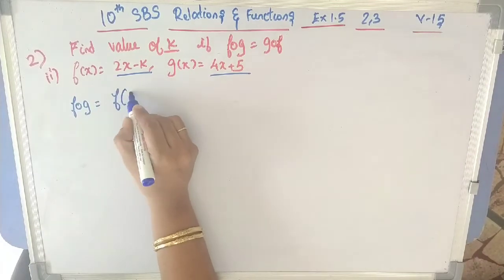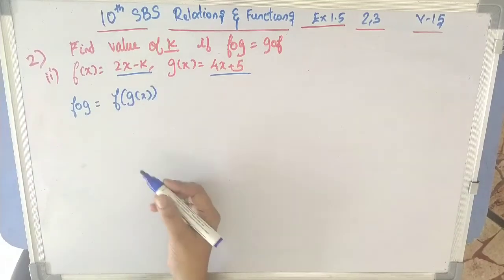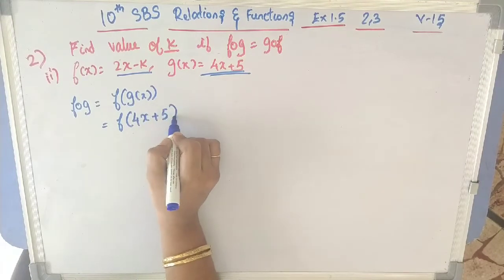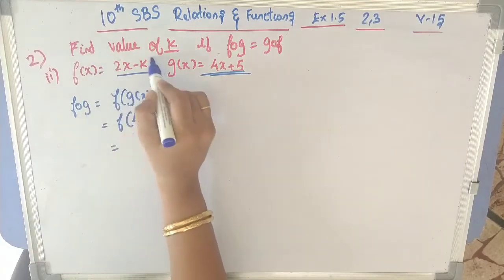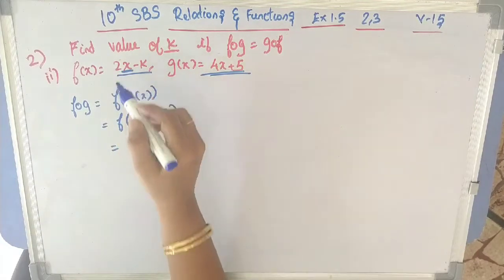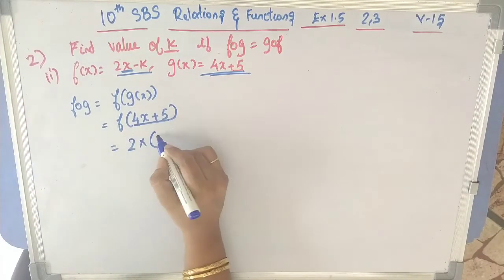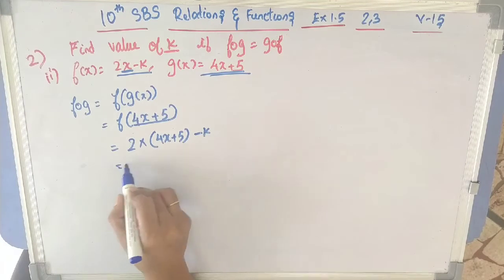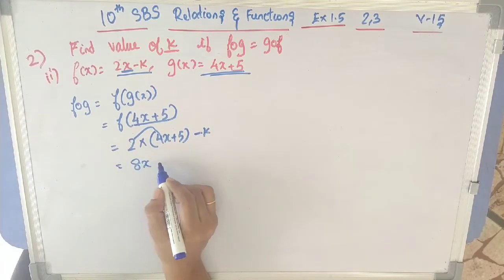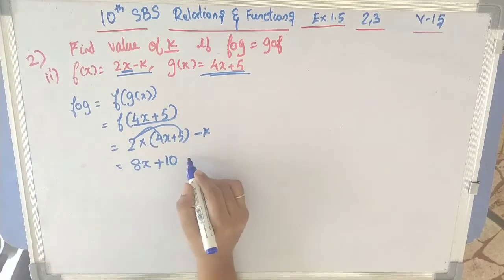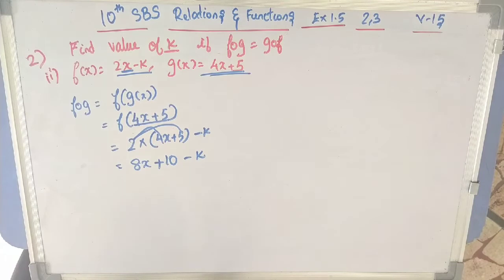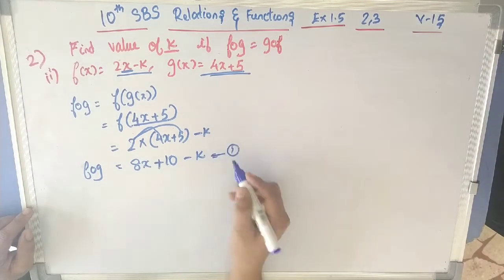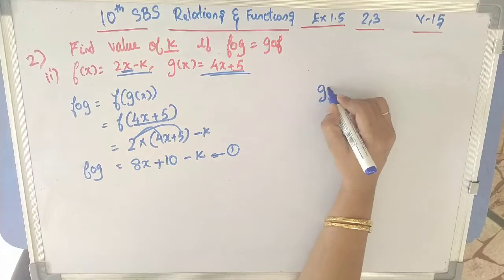First let us find f∘g, which is f of g(x). g(x) = 4x + 5, so in f(x) = 2x − k, substitute 4x + 5 for x: 2(4x + 5) − k = 8x + 10 − k. This is f∘g and I am marking it as equation 1.